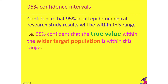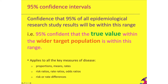Confidence intervals can be used with all key measures of disease: proportions, means, rates, risk ratios, rate ratios, odds ratios, risks, rates, odds, and risk and rate differences. So we are confident that 95% of all research studies about sugar and heart attacks would have findings that fall within the confidence interval range of values.